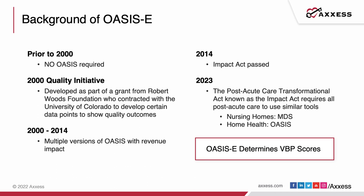There was a quality initiative to get funding from the Robert Wood Johnson Foundation, and CMS contracted with the university to come up with a set of items that would allow us to track quality and improvement for the patient. From the year 2000 to 2014, we had multiple versions of OASIS — from plain OASIS to OASIS D1. The 2014 IMPACT Act precipitated activity that led up to OASIS E. The IMPACT Act said we needed a tool we could use across all post-acute care settings.